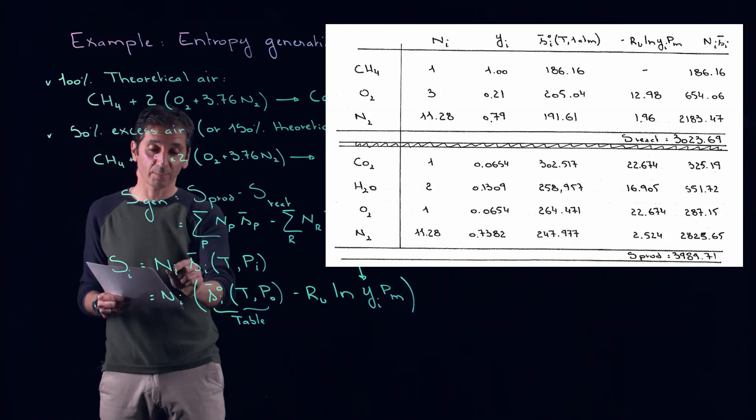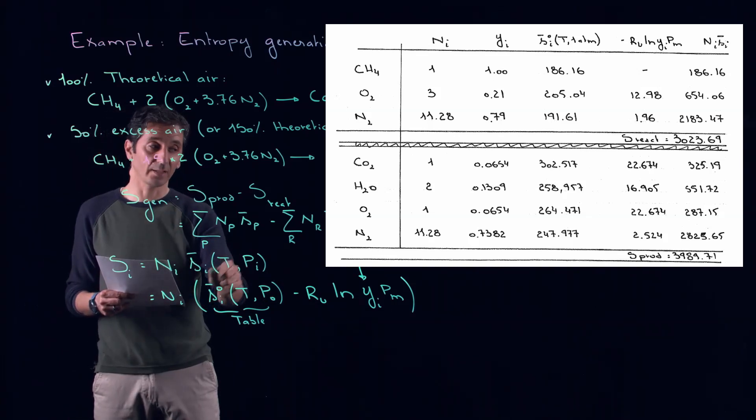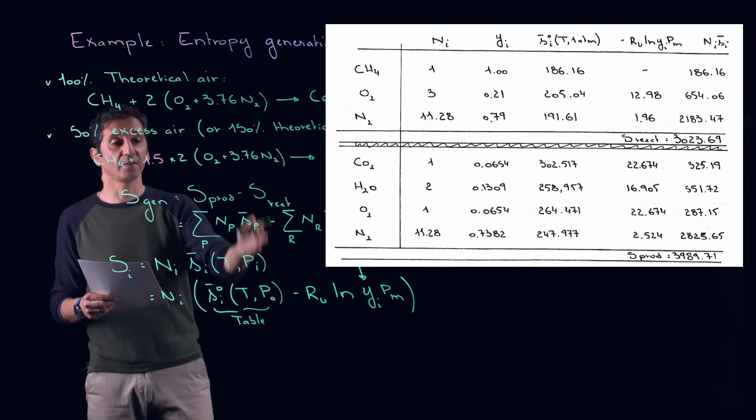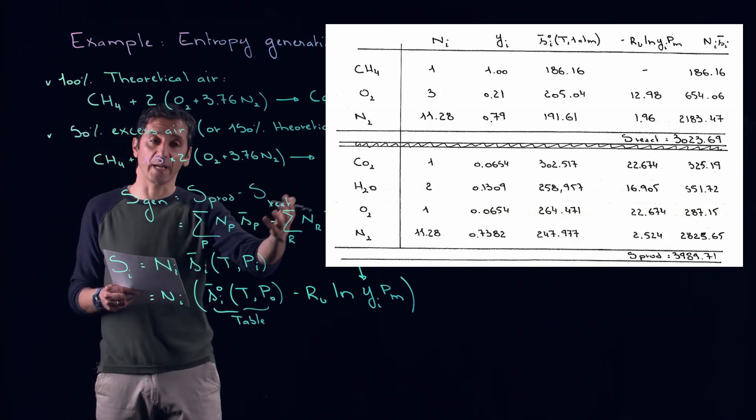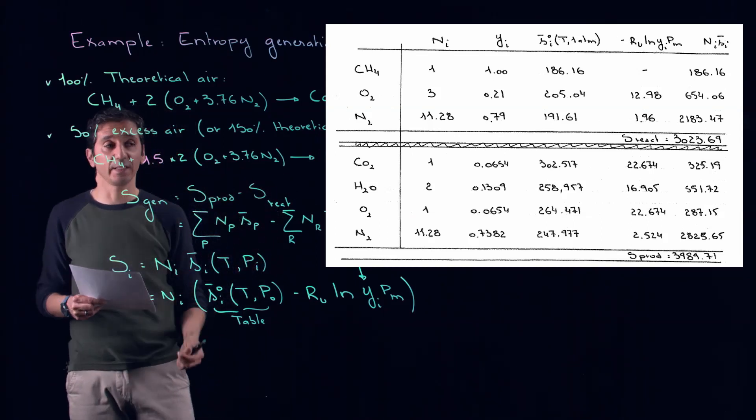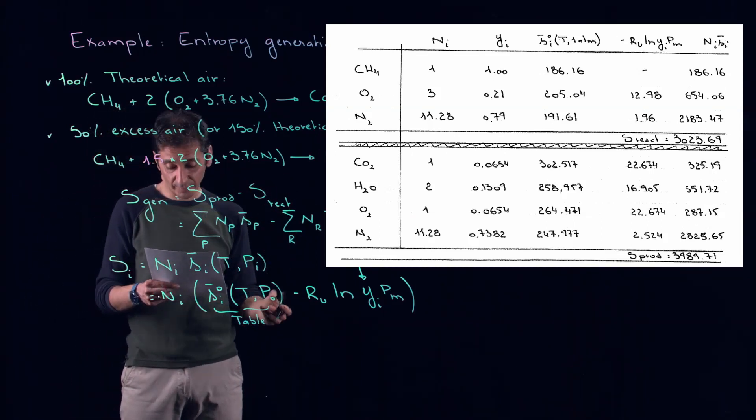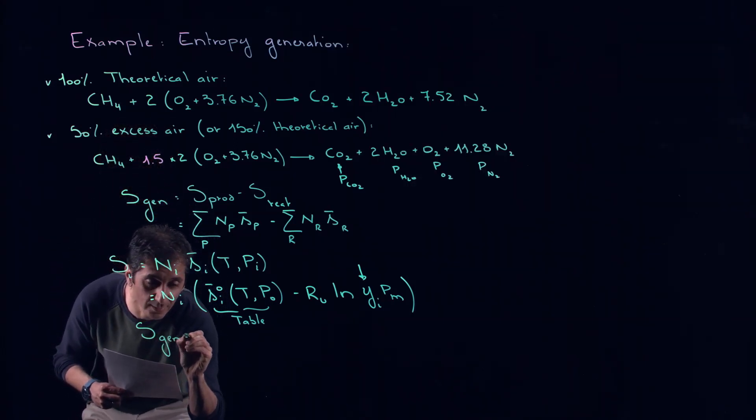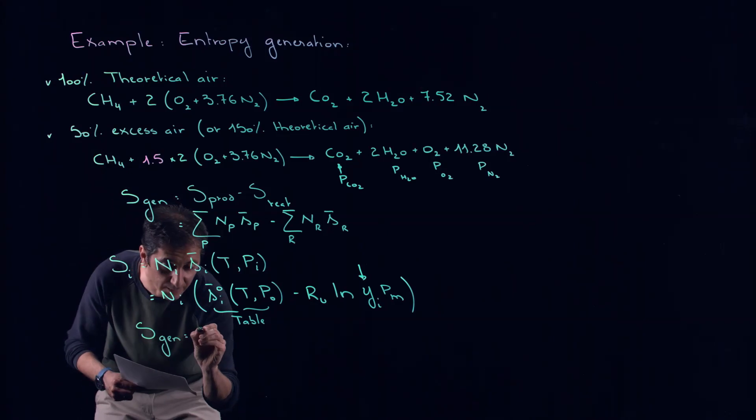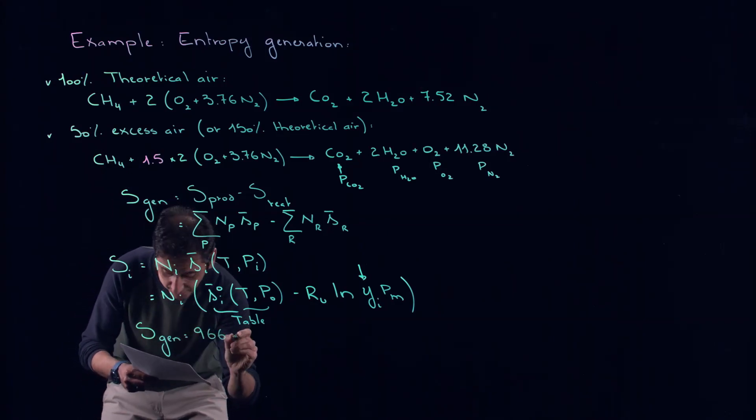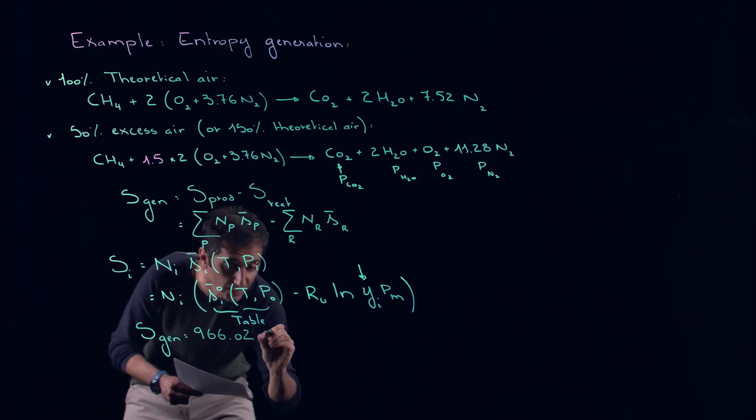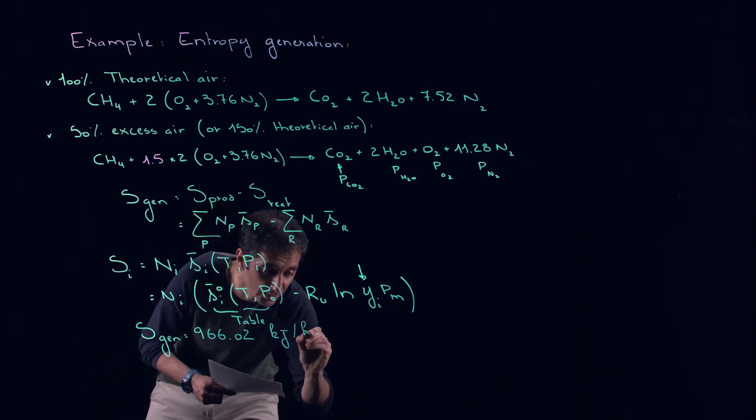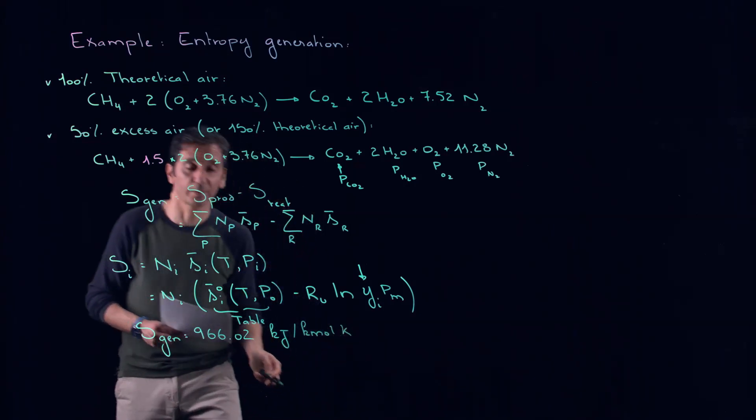Then the rest is just we multiply NI by SI, and at the end we sum up all this to get S of the products and S of the reactants. We subtract them and this will lead to the value of S generated that we will get for this example. S generated will be equal to 966.02 kilojoules per kilomole Kelvin.